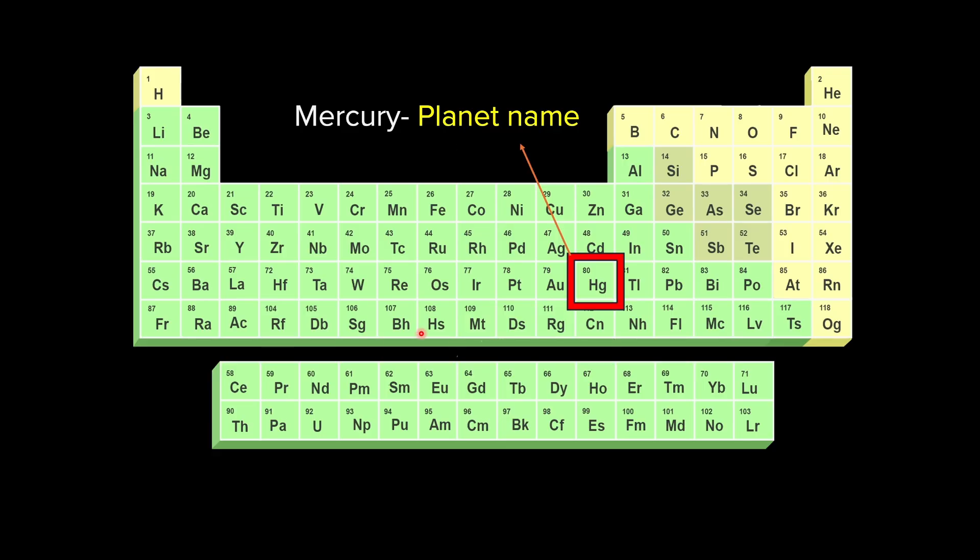Now let's take a look at this element number 107. The name is Bohrium. Of course the name is coming from the name of the scientist Niels Bohr.